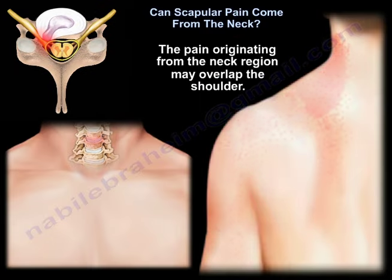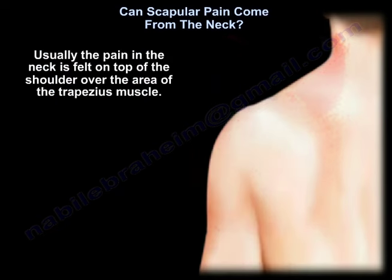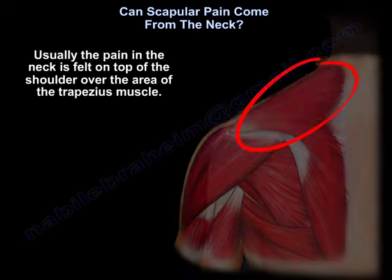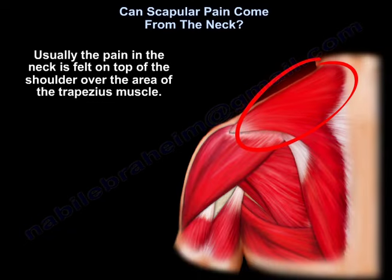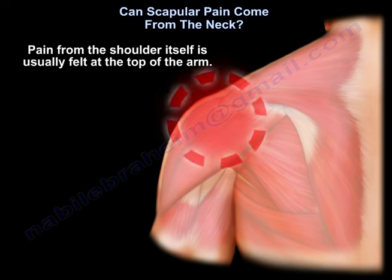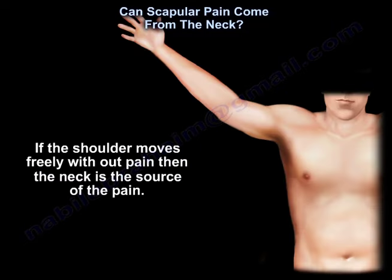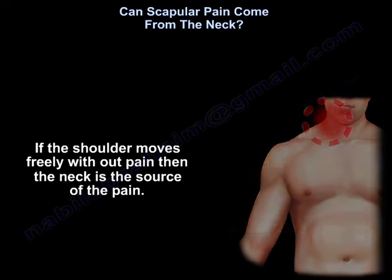The pain originating from the neck region may overlap the shoulder. Usually, pain in the neck is felt on top of the shoulder over the area of the trapezius muscle. Pain from the shoulder itself is usually felt at the top of the arm. If the shoulder moves freely without pain, then the neck is the source of the pain.